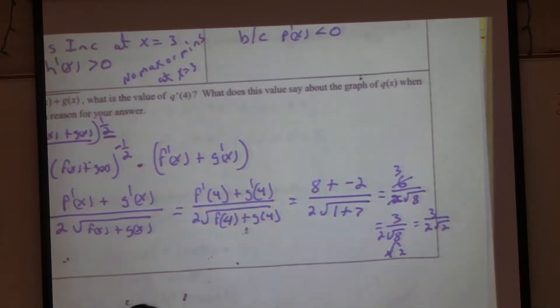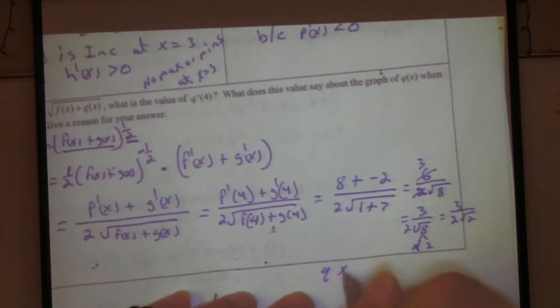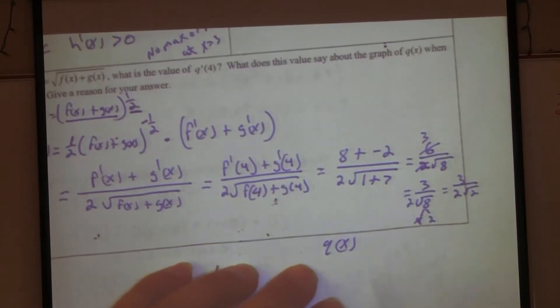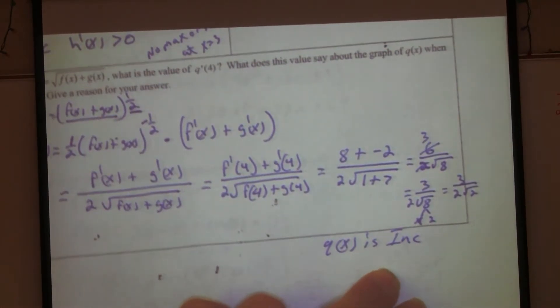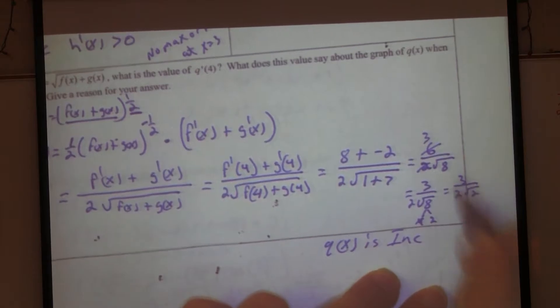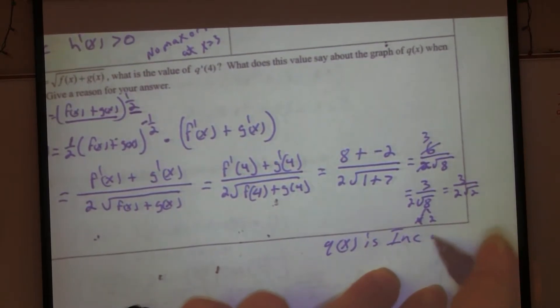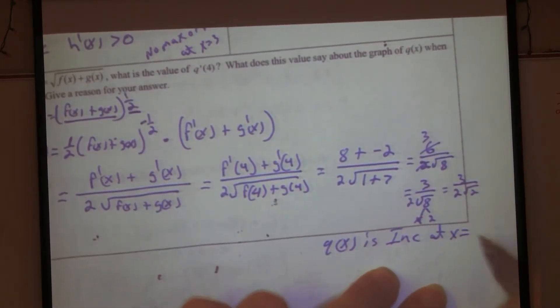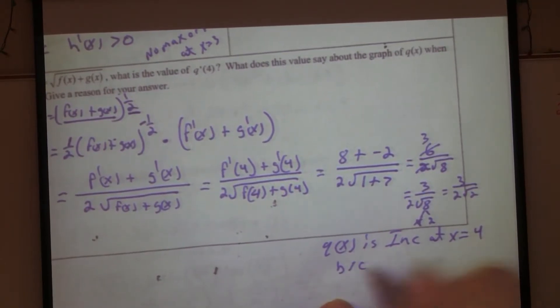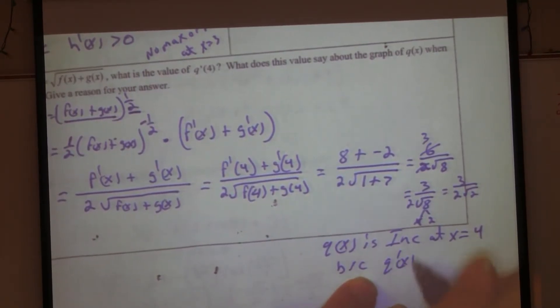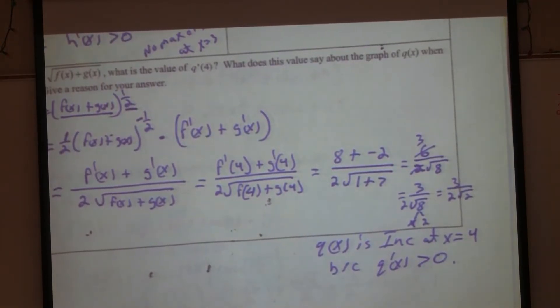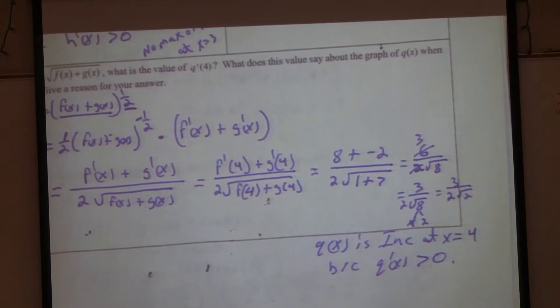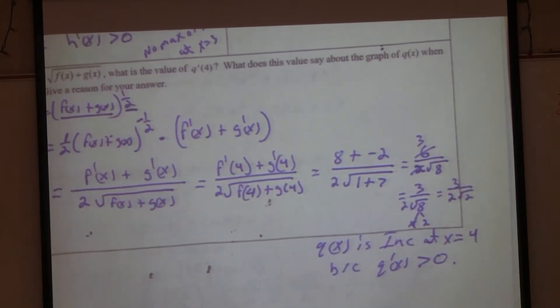So now we can answer the question. What does this tell us about Q of X? The original graph. What can we say about the function? Q of X is increasing. Why is it increasing? Because this is a positive value. So it's increasing at X equals 4. Again, because Q prime of X is greater than 0. Easy? You got it?